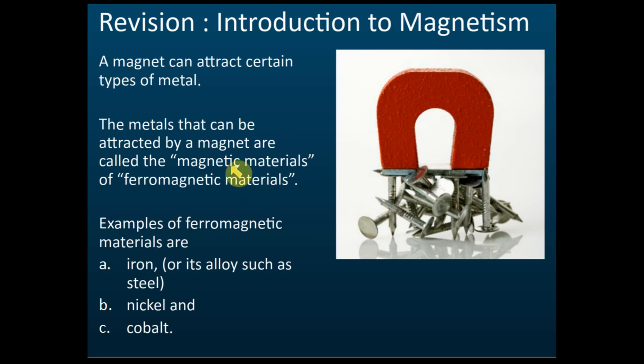If a metal can be attracted by a magnet, it is called a magnetic material. If it can be strongly attracted by a magnet, that is called a ferromagnetic material. There are some metals that can be attracted by magnets with a very weak force, and that is also called a magnetic material.